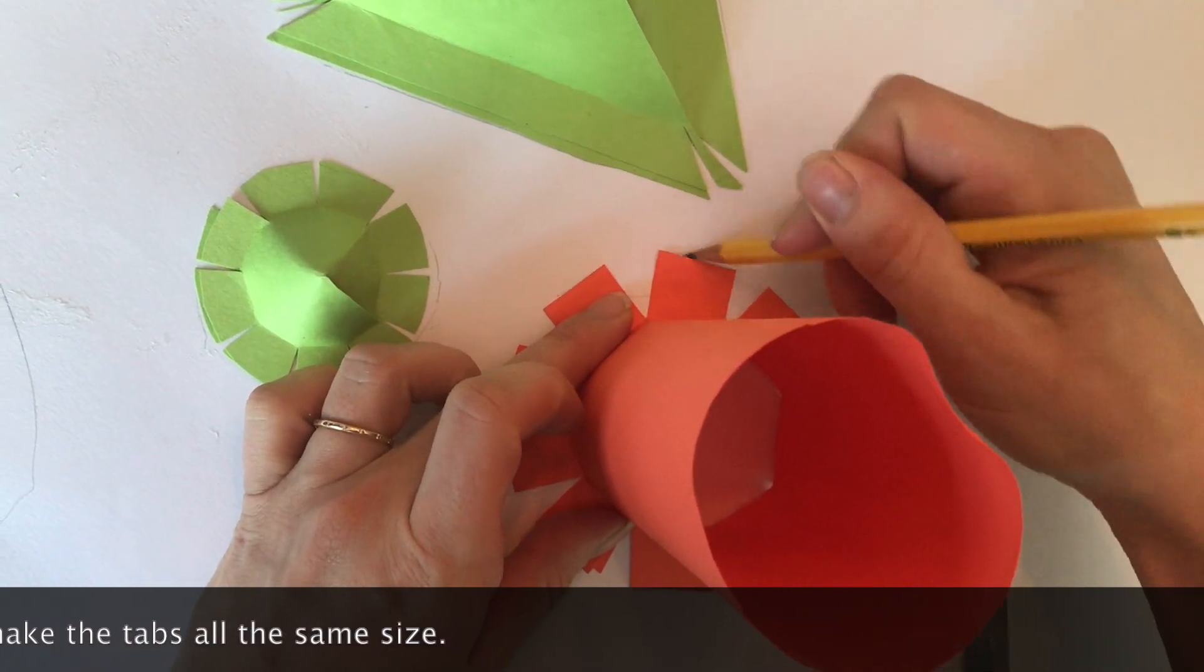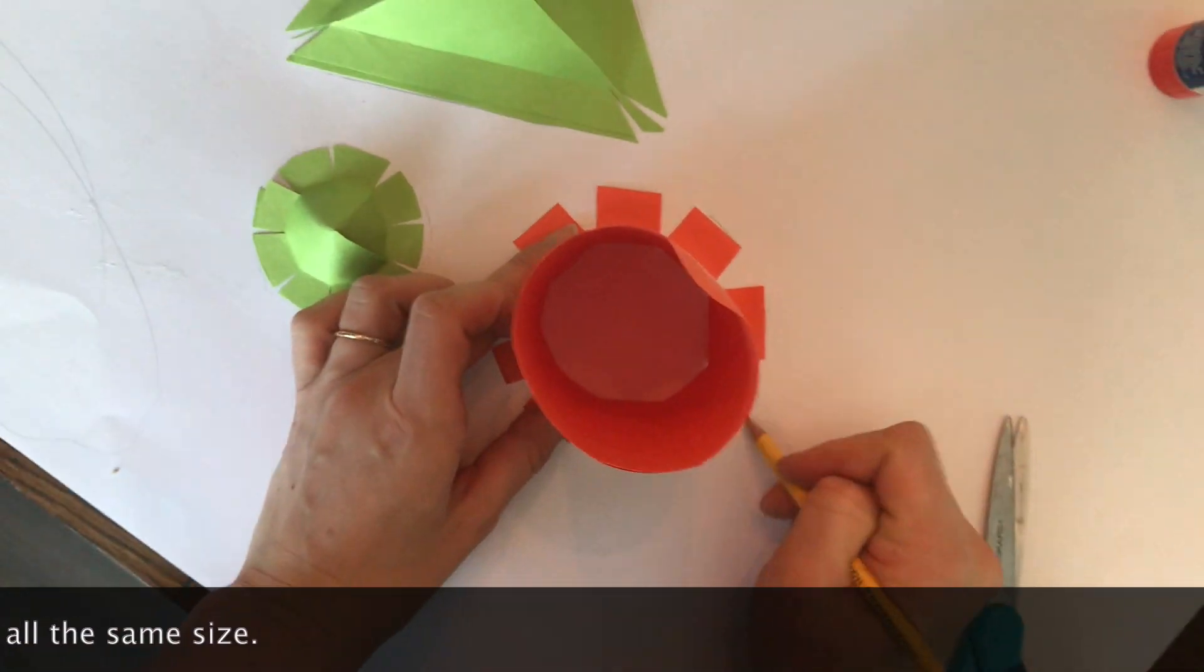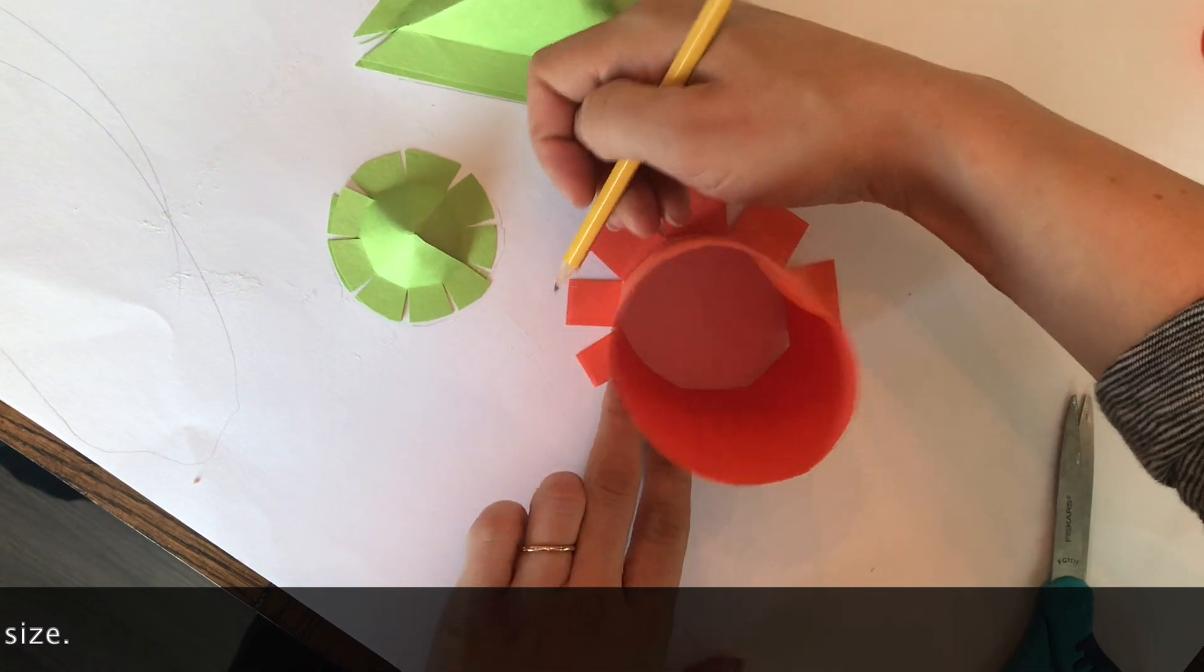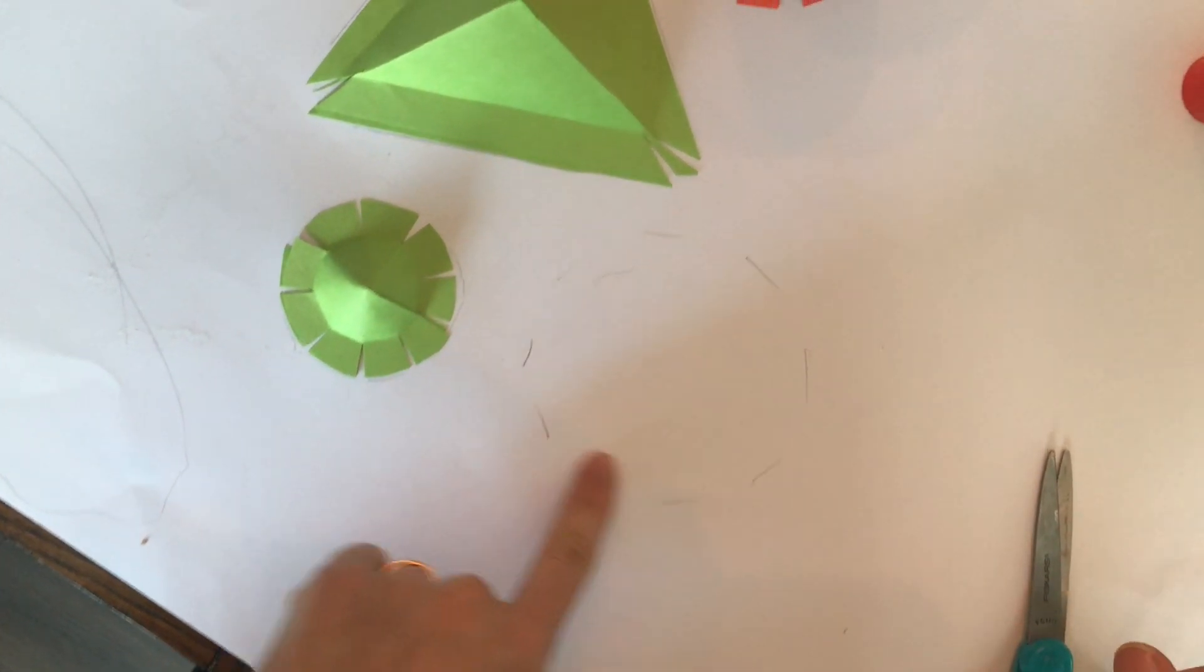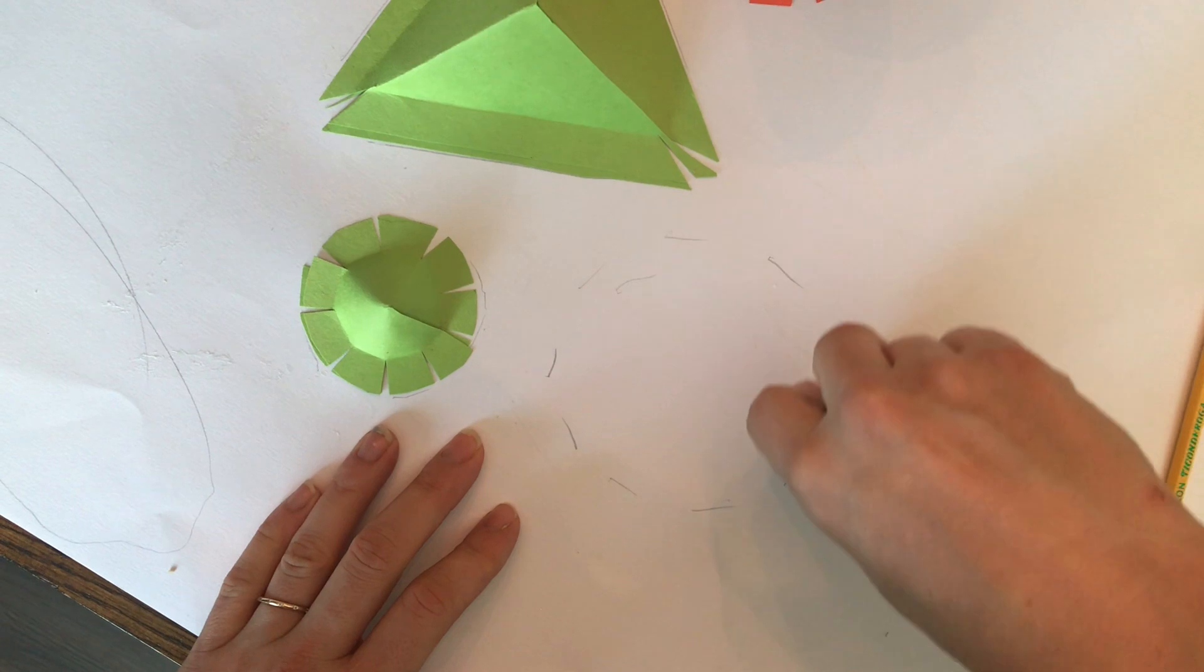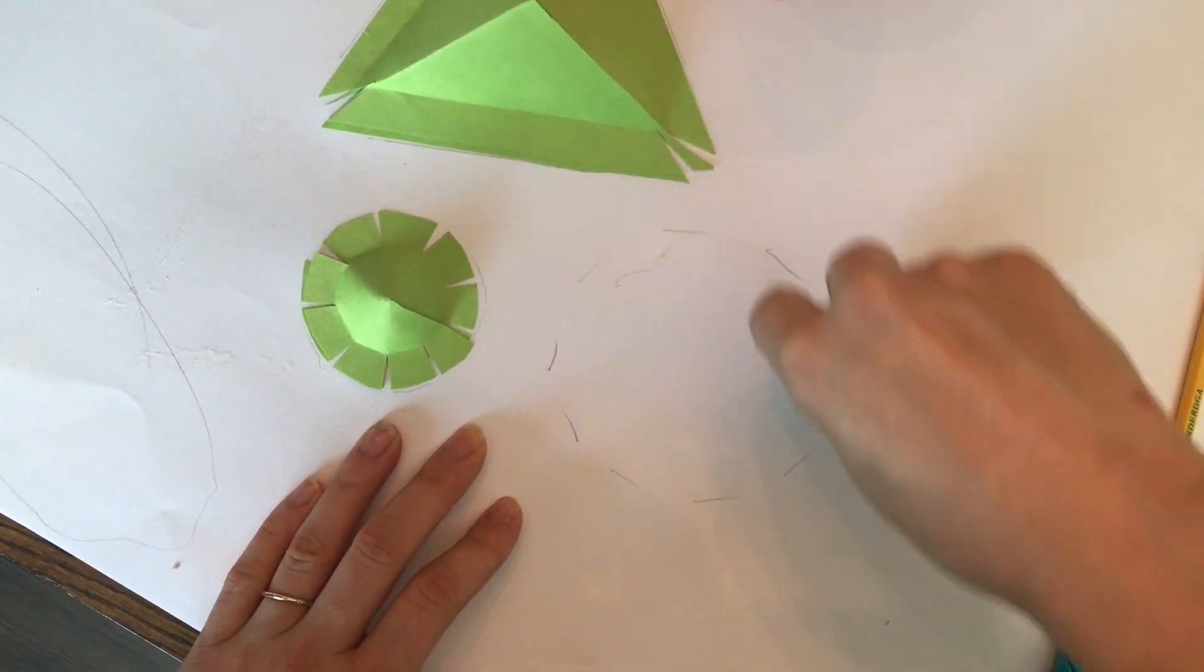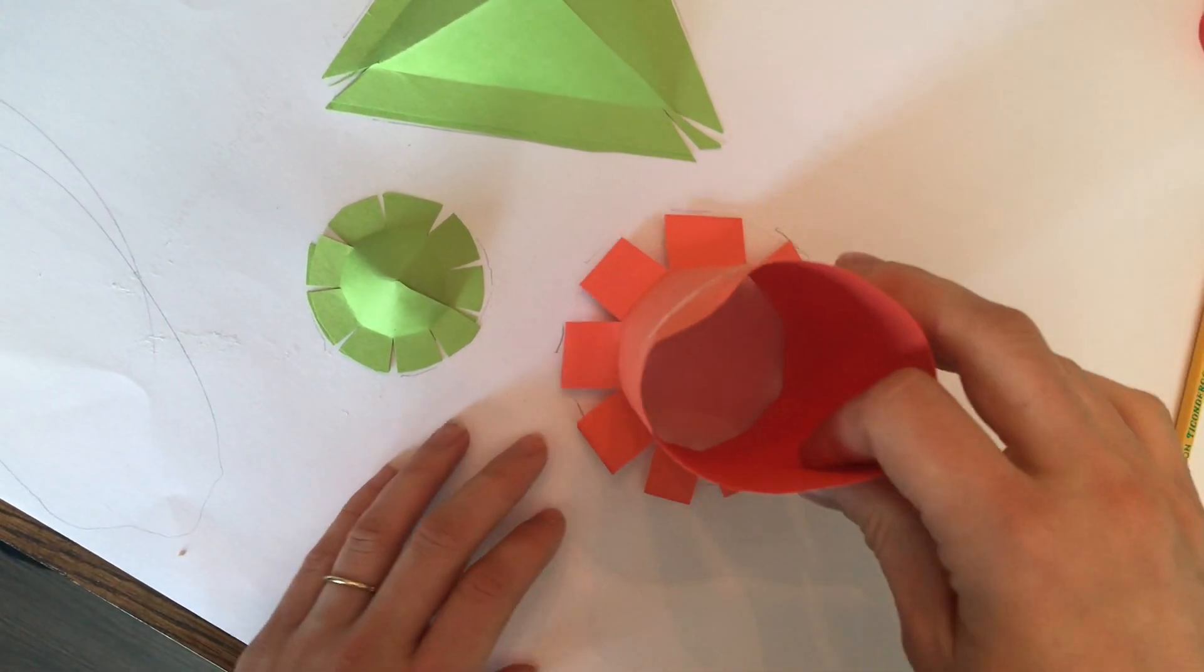Here's a tip to make it easier when you're gluing. Put your shape down on your base or your paper where you want to glue it and mark where your tabs are. Pick your shape up, move it to the side and add glue inside that mark.